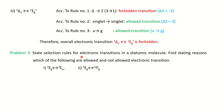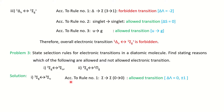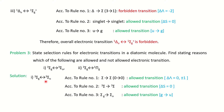Problem 4, transition (a): ³Σg→³Σu. Rule 1: Σ→Σ (Δλ=0) — allowed. Rule 2: triplet to triplet (ΔS=0) — allowed. Rule 3: g→u — allowed. Since all rules are satisfied, the overall electronic transition is allowed.